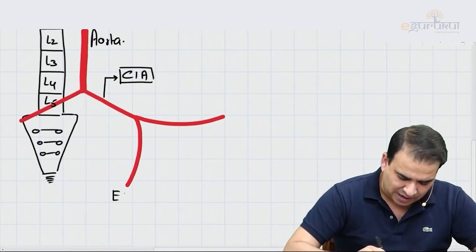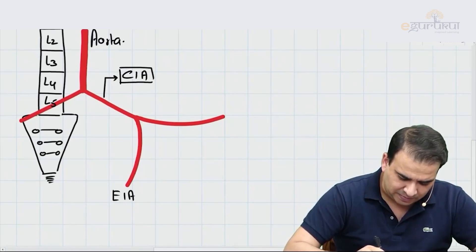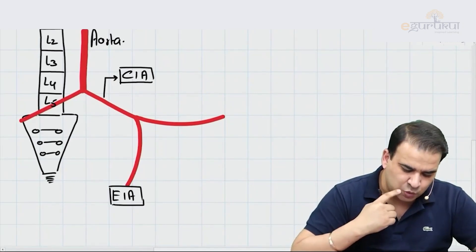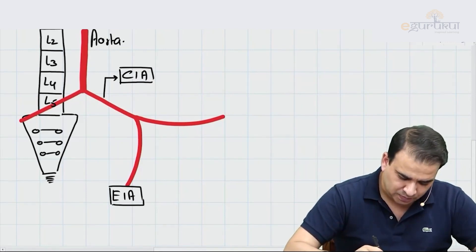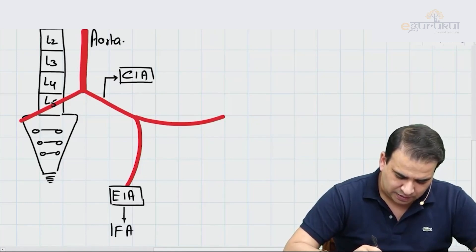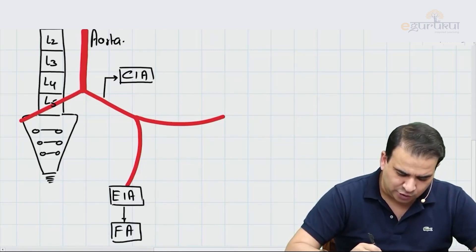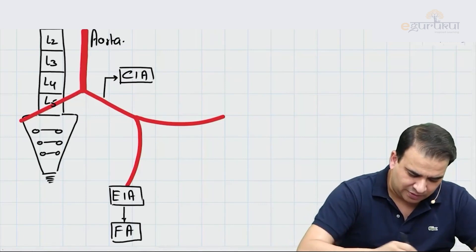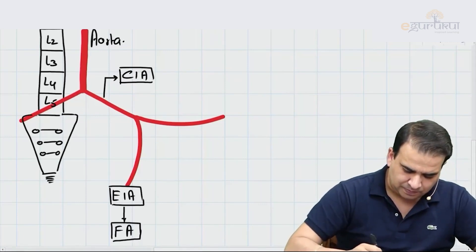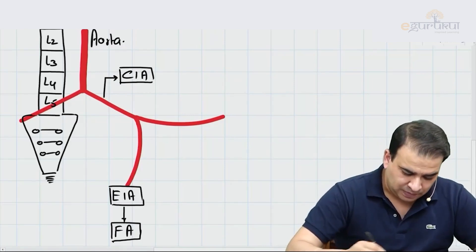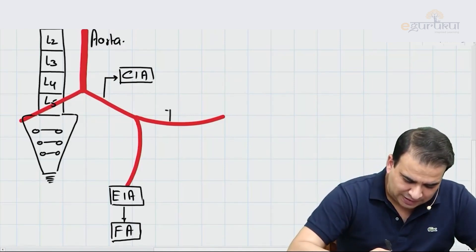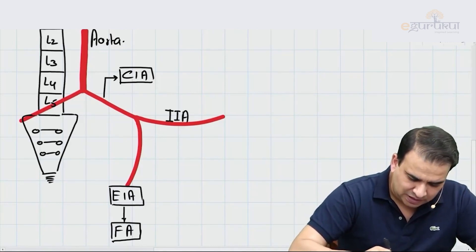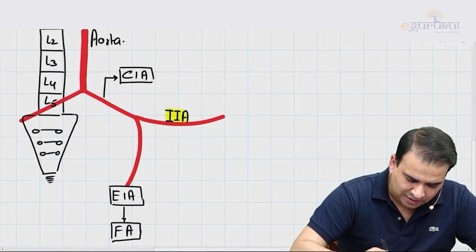The external iliac artery is the one which continues as the femoral artery deep to the inguinal ligament. Our focus right now is the internal iliac artery — that is our main concern.